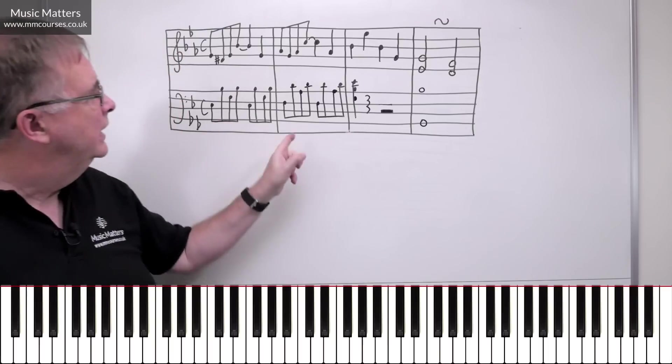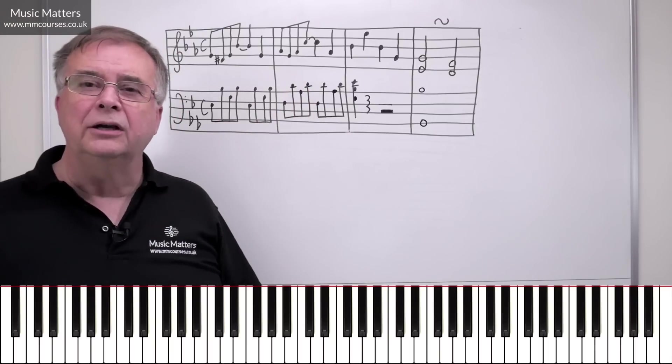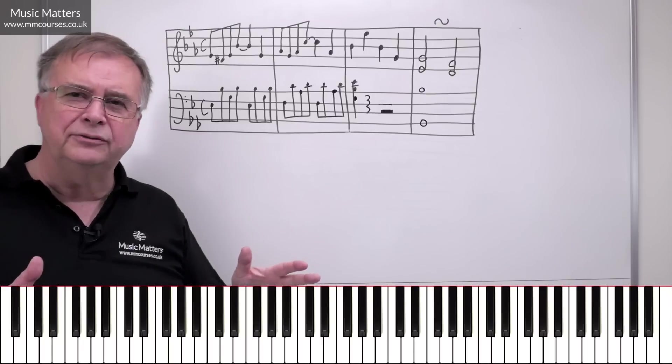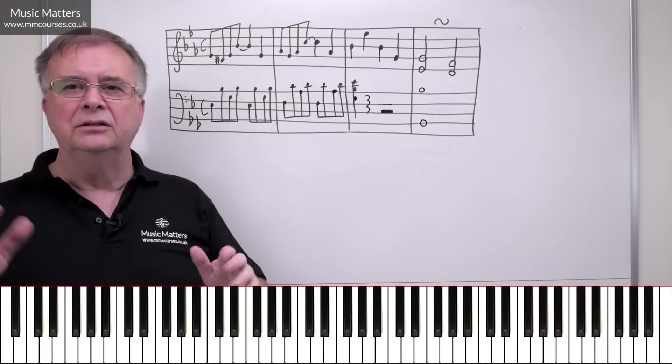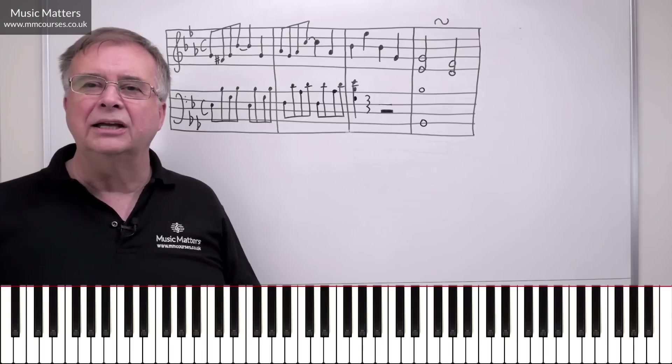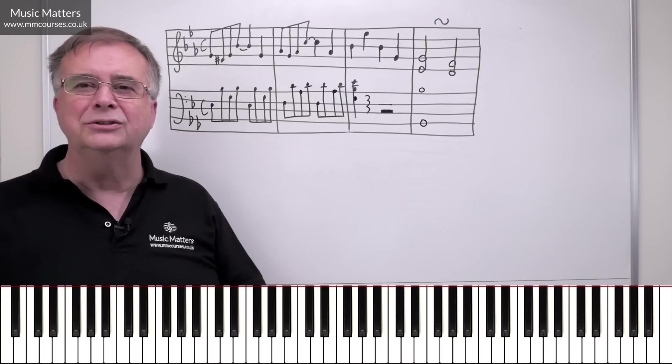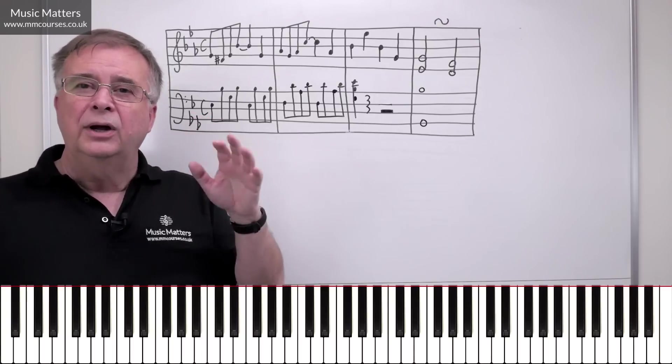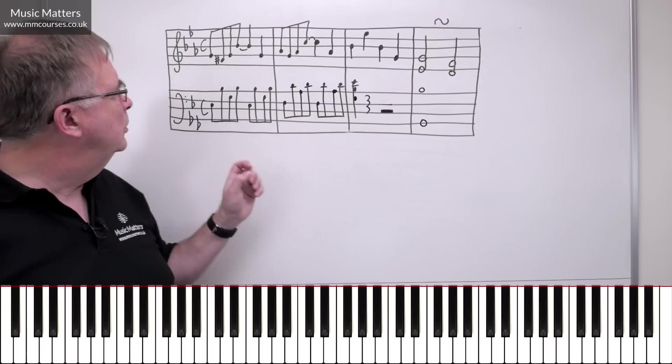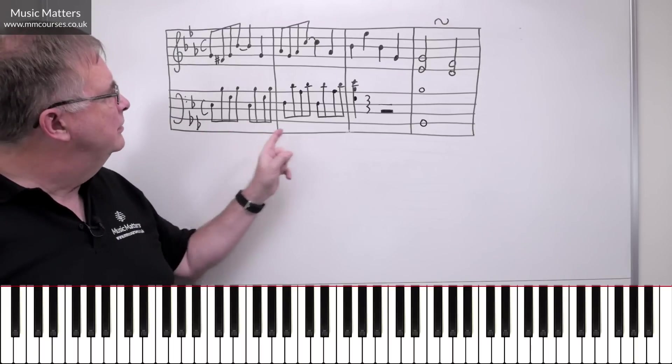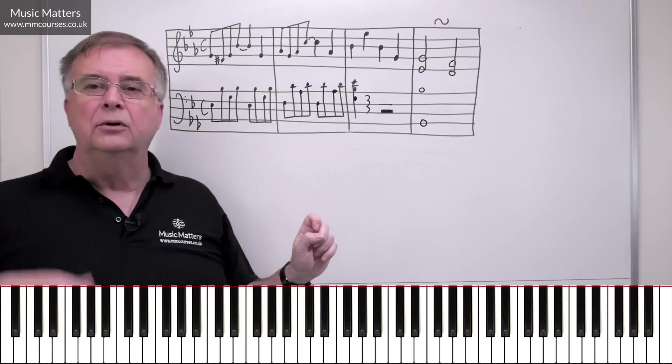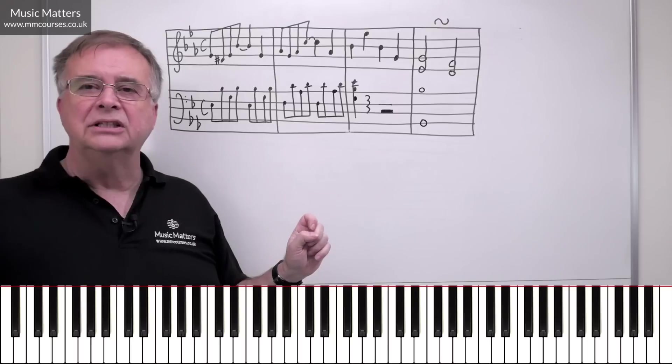So this is part of a formula that we know from something called the passing 6-4. Now if you know about the passing 6-4, that's great. If you don't, we've got some material out there that will explain that to you on YouTube. But quite often you've got this passing 6-4, where you go I, Vc, Ib, or the other way round, Ib, Vc, I.